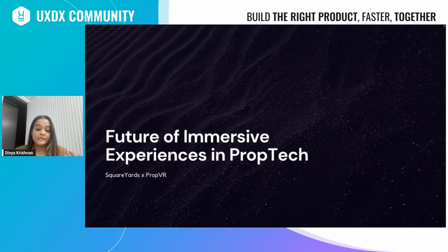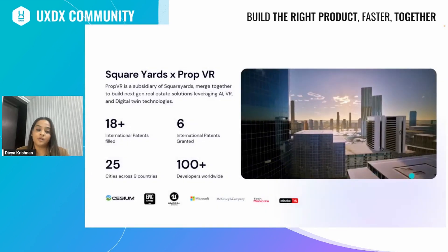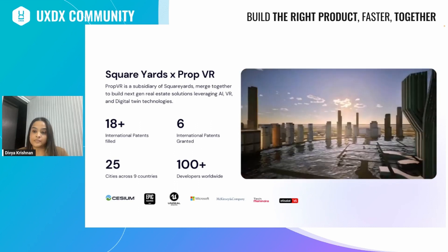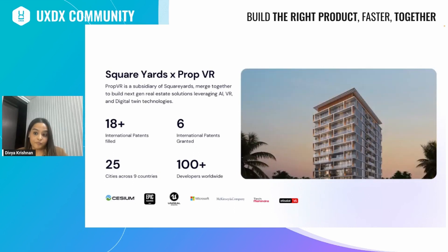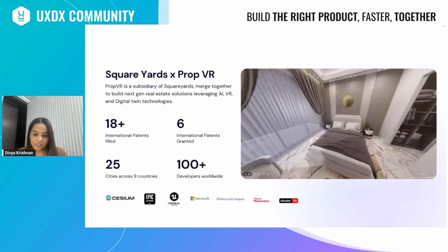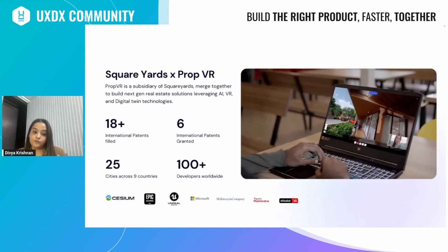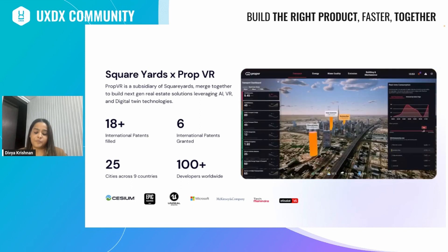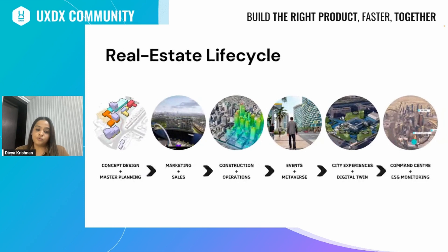Today I'm going to show you how these technologies are revolutionizing the entire real estate end-to-end lifecycle. Square Yards is primarily into real estate — property search and listing, brokerage, mortgages, interior design, and more. Our tech team is PropVR, where all the magic happens. We blend design, 3D, tech, and research to create immersive experiences. We have around 18 plus international patents in this area, of which six are granted, and partnerships with big names like CCM Maps, Unreal, and Microsoft.